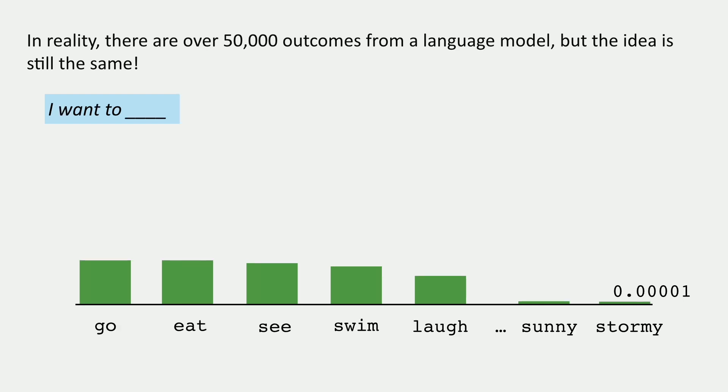If we think about 'I want to blank,' the distribution maybe looks a little different — maybe a lot flatter, because there are a lot of things we want to do. Of course there are still things that are very, very unlikely out at the end, like sunny and stormy. These are still possibilities, but we have a bunch of other things which are the most likely continuations.